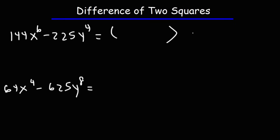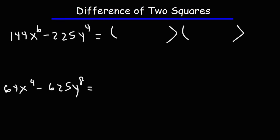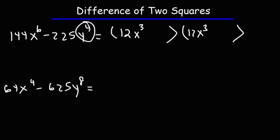Let's start with 144x to the 6th minus 225y to the 4th. The square root of 144 is 12, and the square root of x to the 6th — divide 6 by 2 — gives x cubed. So we have 12x cubed. The square root of 225 is 15, and the square root of y to the 4th is y squared, giving 15y squared. So we have 12x cubed plus 15y squared times 12x cubed minus 15y squared.